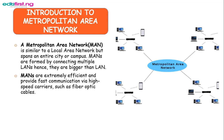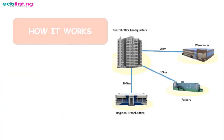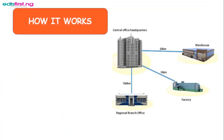Metropolitan area networks are extremely efficient and they provide fast communication via high-speed carriers such as fiber optic cables. A metropolitan area network is a network that interconnects users with computer resources in a geographic area larger than a local area network. It is ideal for many kinds of network users because it is a medium-sized network, and usually involves connection of high-speed fiber optic wires to boost data transfer speed.